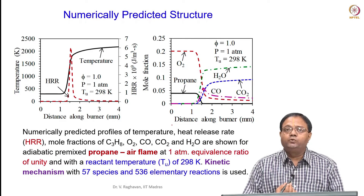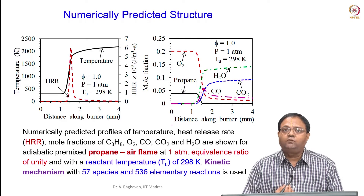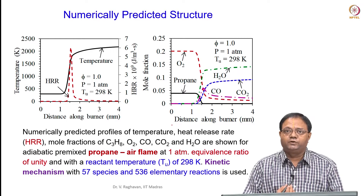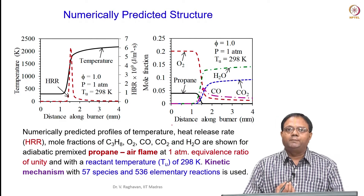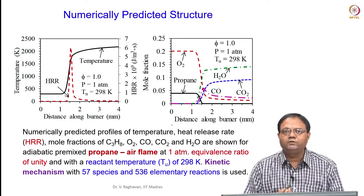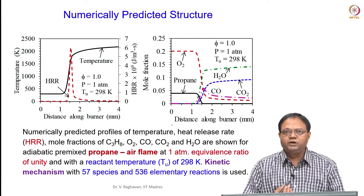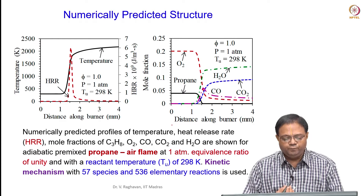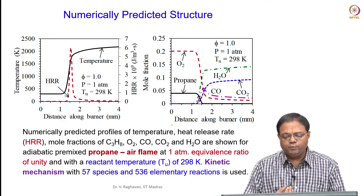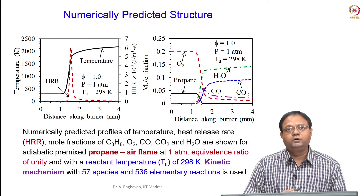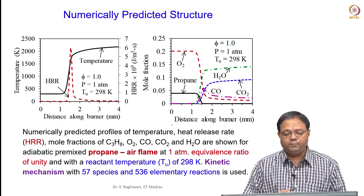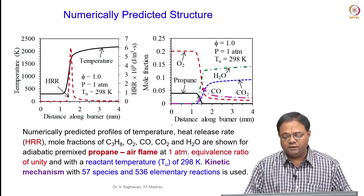When you do that and solve several equations — if there are n species, that gives n minus 1 equations plus the energy equation — then we will be able to get the structure of the flame in a more detailed manner.